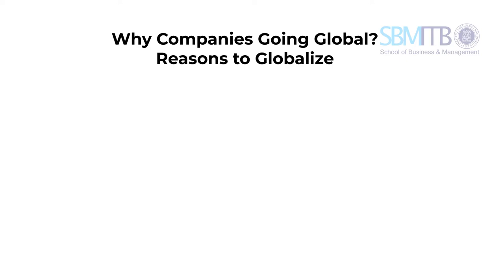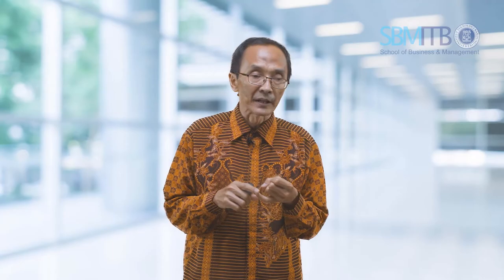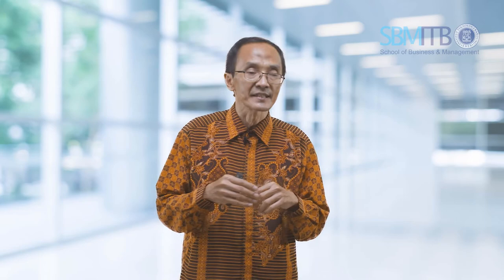Number one, they are going global because they want to improve the supply chain cost. By operating in certain other countries, they will have the best location for raw material sources as well as talented local workers. Another possibility is reducing costs because of foreign exchange rates, giving a lower production cost through the use of local currencies.